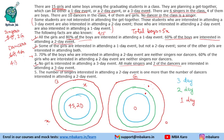70% of the boys interested in attending a two-day event are neither singers nor dancers, meaning 30% are singers or dancers. Similarly, 60% of the girls interested in a two-day event are neither singers nor dancers, so 40% are singers or dancers. For 30% of 3x to be an integer, x must be a multiple of 10.